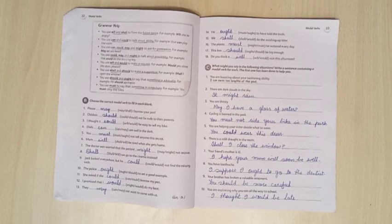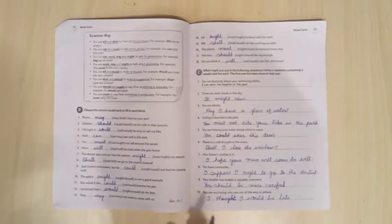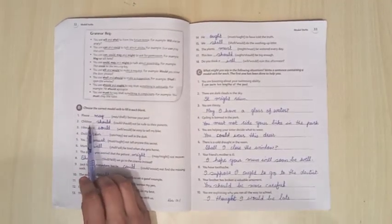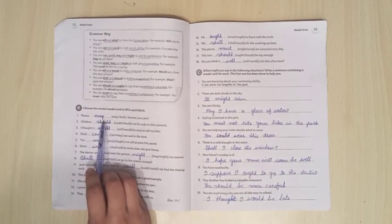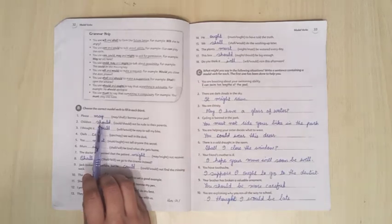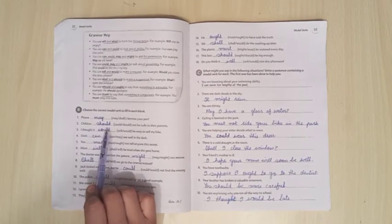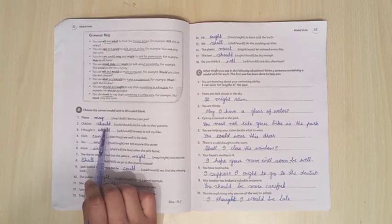Now come to exercise B. Choose the correct modal verb to fill in each blank. First: Please, may I borrow your pen? May will be used as a modal verb here because to ask for permission. Next, children should not be rude to their parents. Should will be used here as a modal verb because something is advisable.